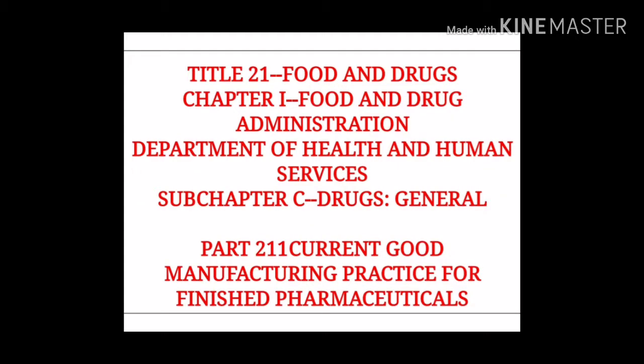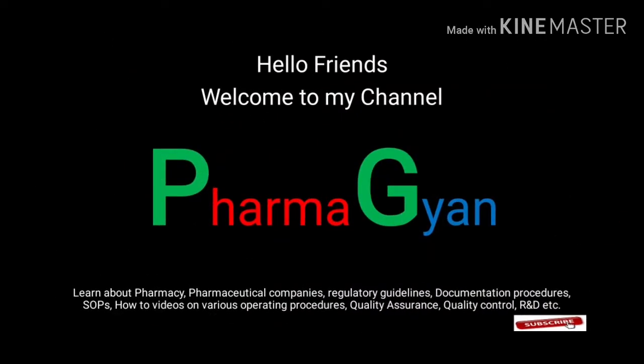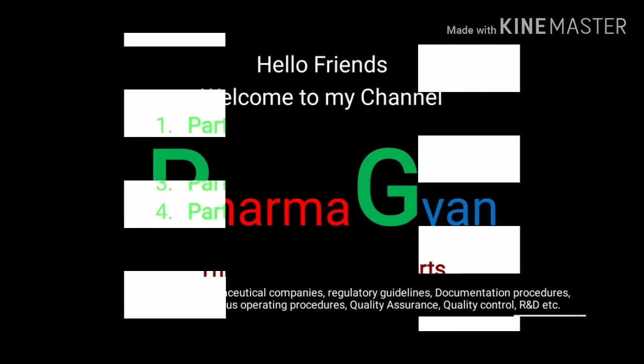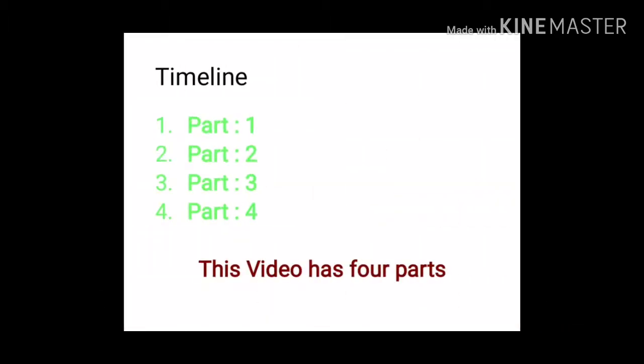Hello friends, welcome to my channel Pharma Gyan. Today we will discuss Title 21, Food and Drug Administration, Chapter 1, Food and Drug Administration, Department of Health and Human Services, Subchapter C, Drugs General, Part 211: Current Good Manufacturing Practices for finished pharmaceuticals. Please don't forget to like and subscribe to my channel. This video has four parts covering the complete 21 CFR Code of Federal Regulations from the USFDA.